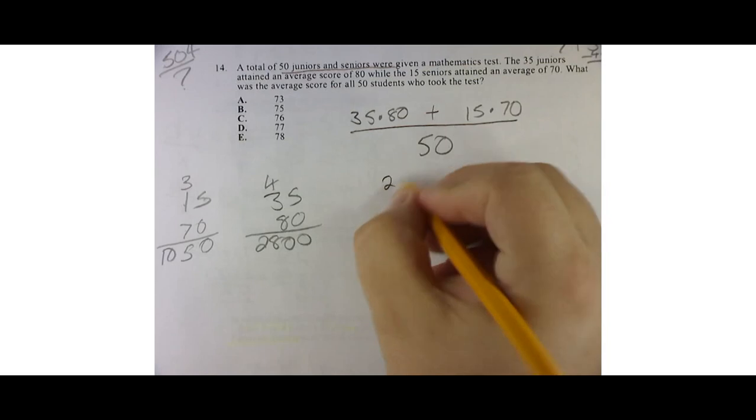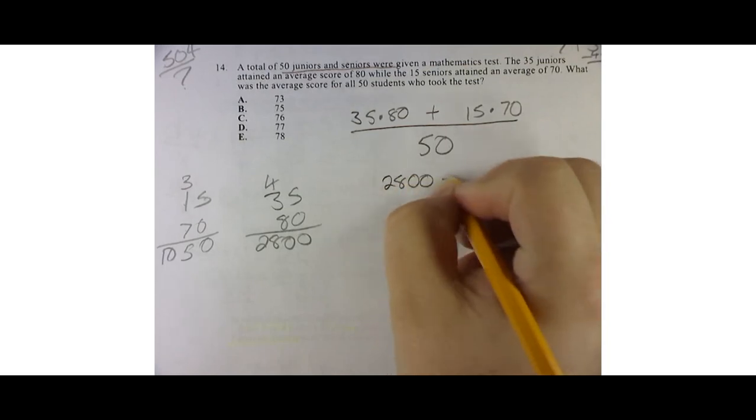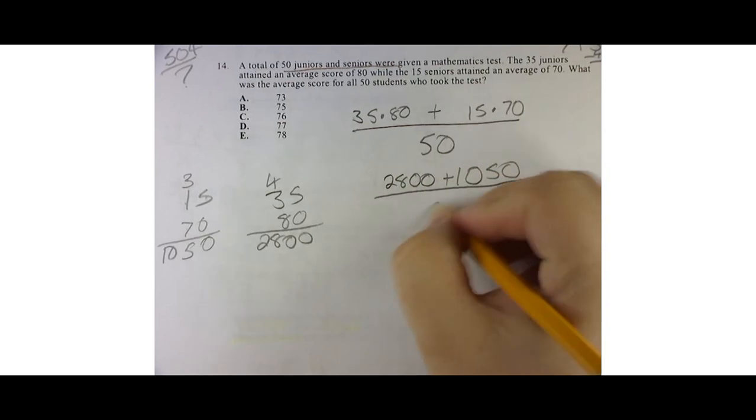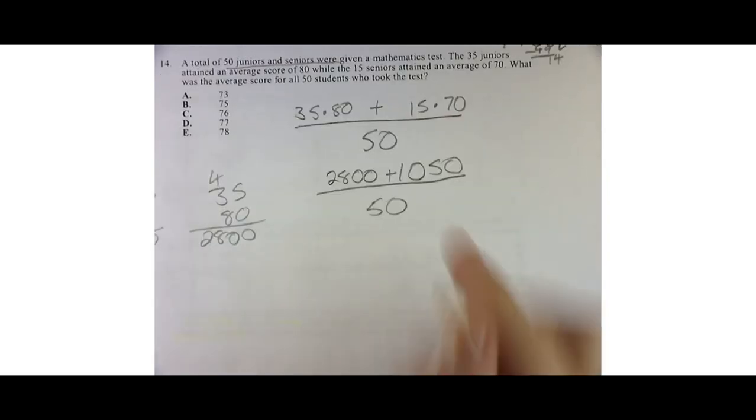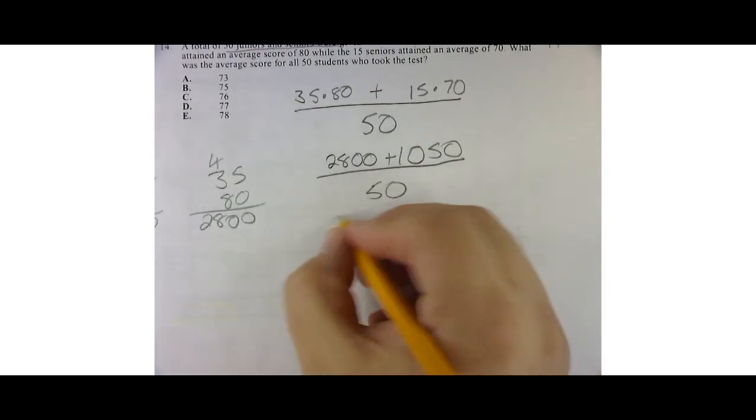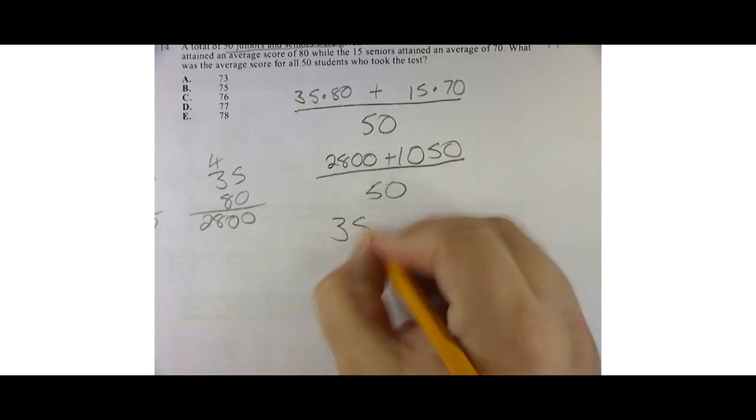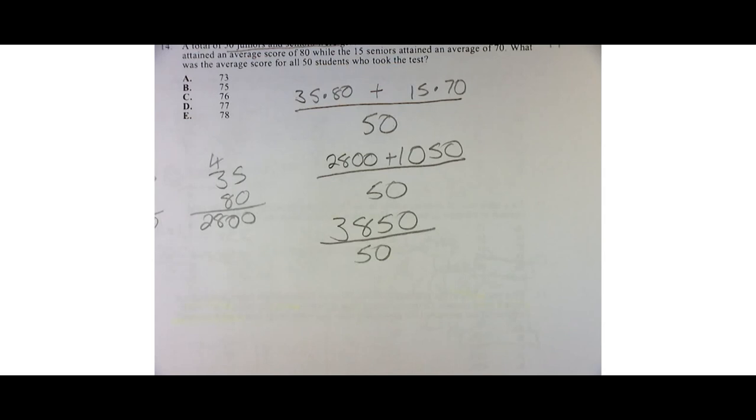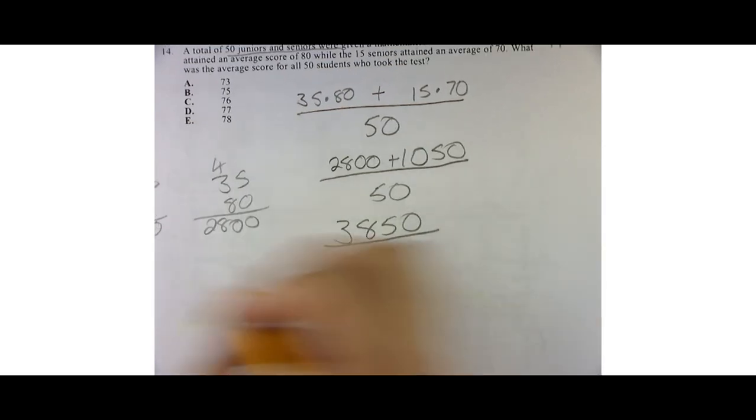So I've got 2800 plus 1050 divided by 50. So if I add those up, I've got 3850 divided by 50. Uh-oh, put your thinking caps on. We're going to have to do some long division.